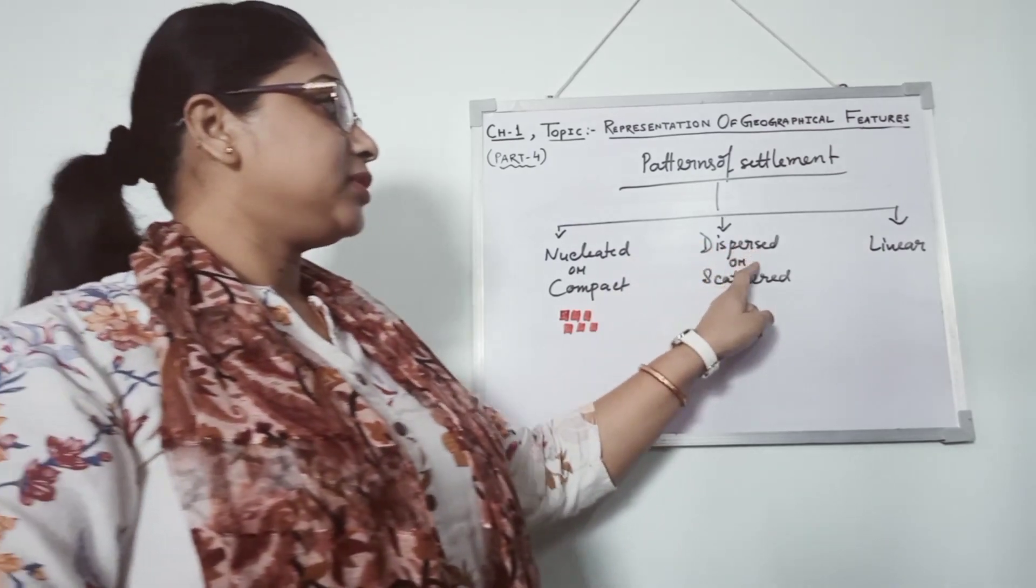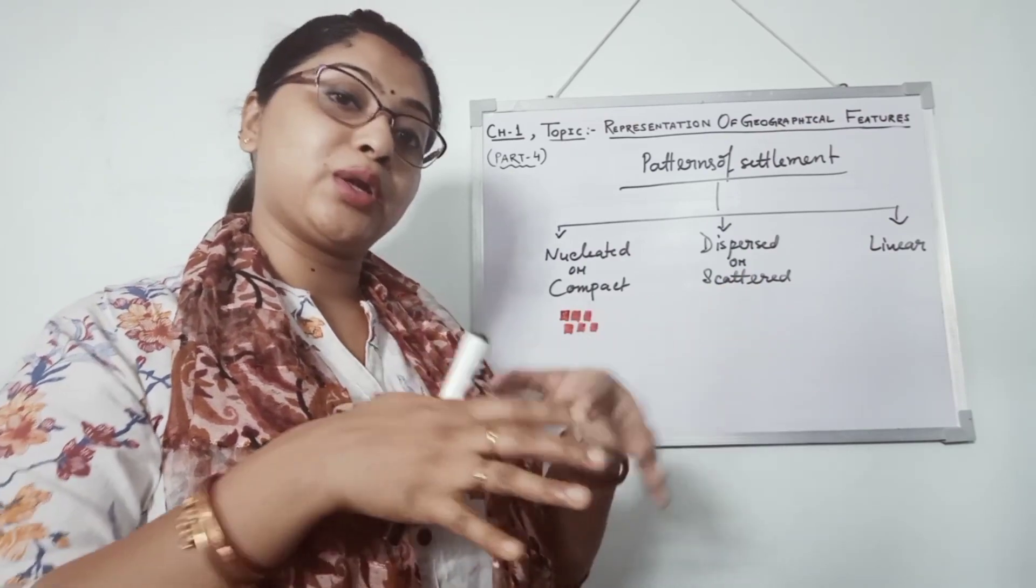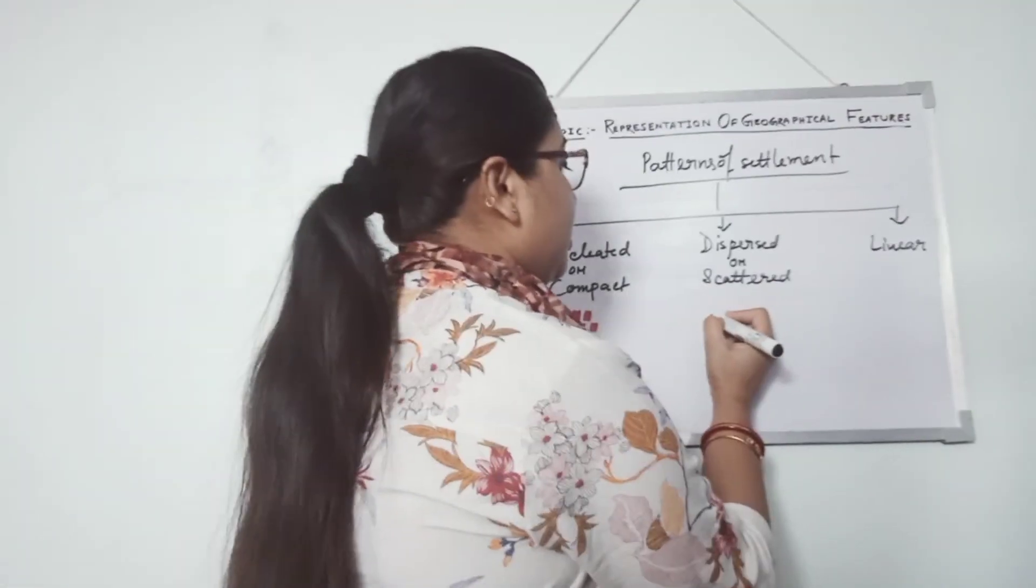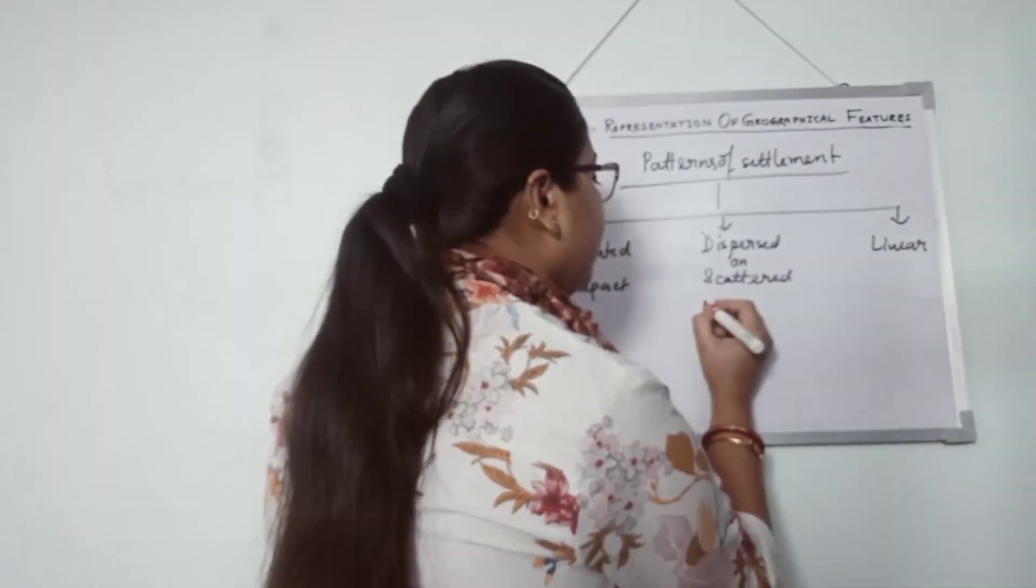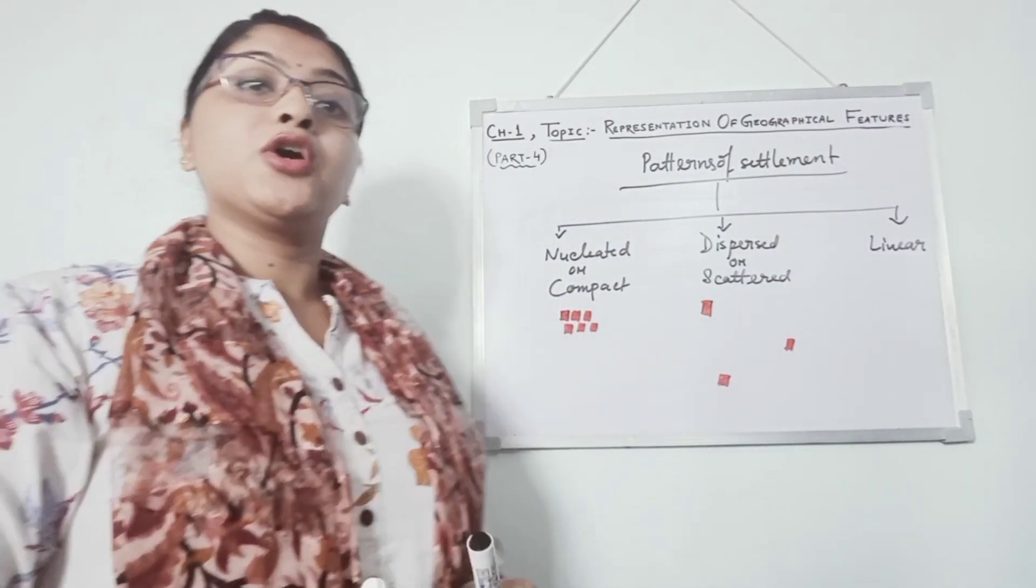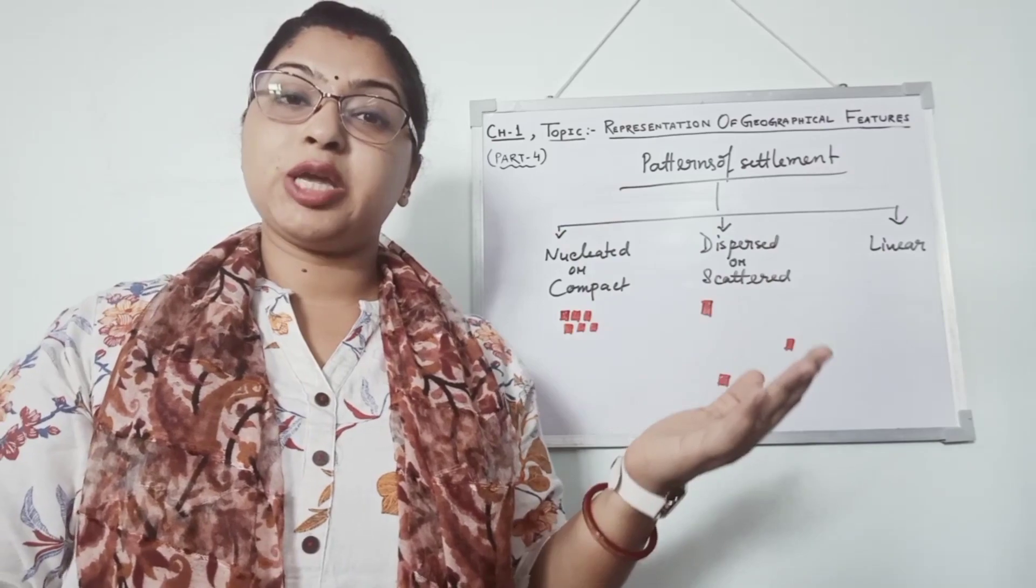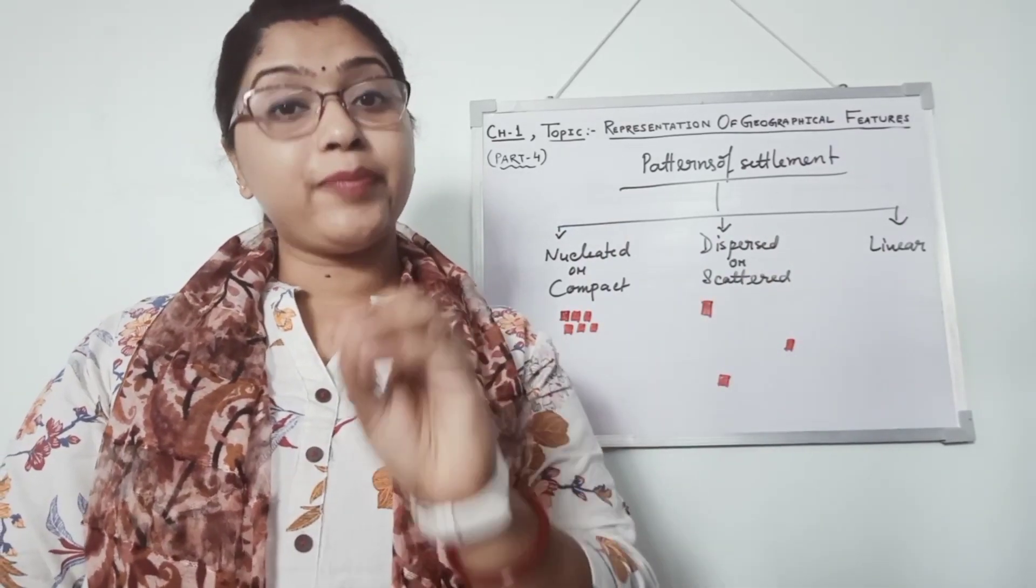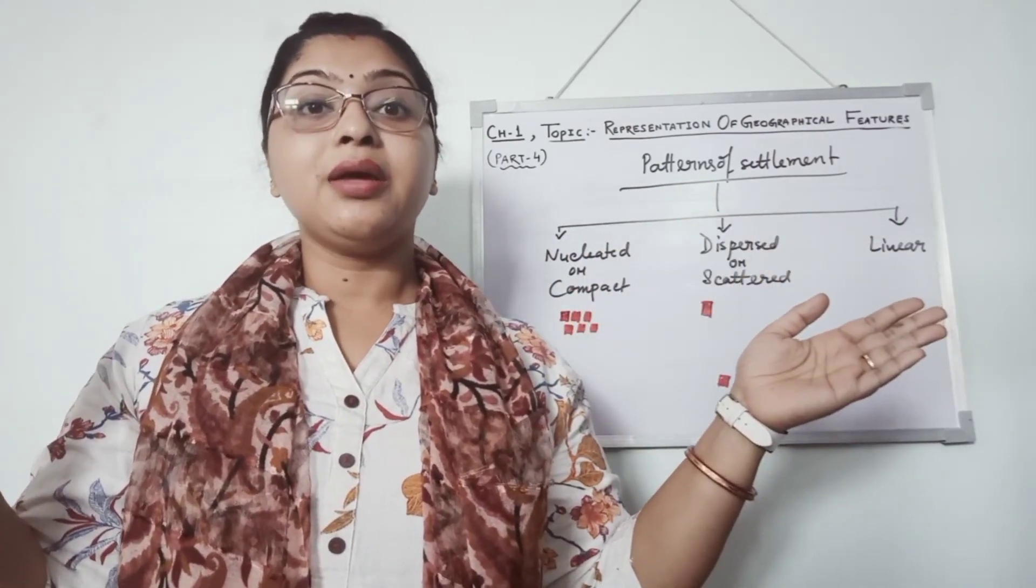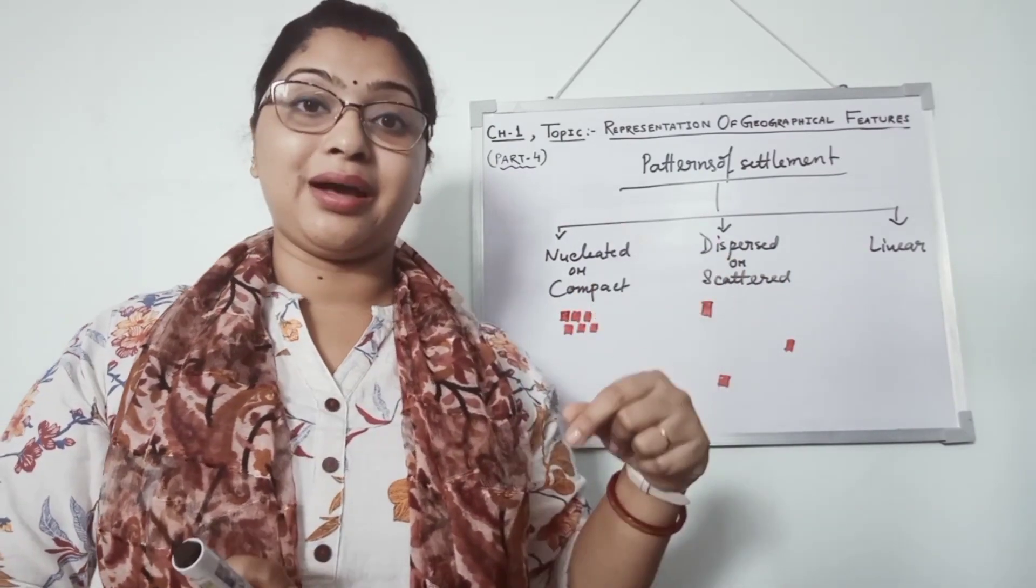Now dispersed or scattered. Here the houses basically we will not get to see close. Means here it will be far apart. Far from each other. Here you will get to see one house is here, another will be there, another will be there. It means they are not close to each other. And where we can get to see? Where the climatic condition is extreme, not suitable for living. As well as we can say that in the Punjab-Haryana part, where large farms are there. People live there to look out of that farm. They used to live in that scattered area.